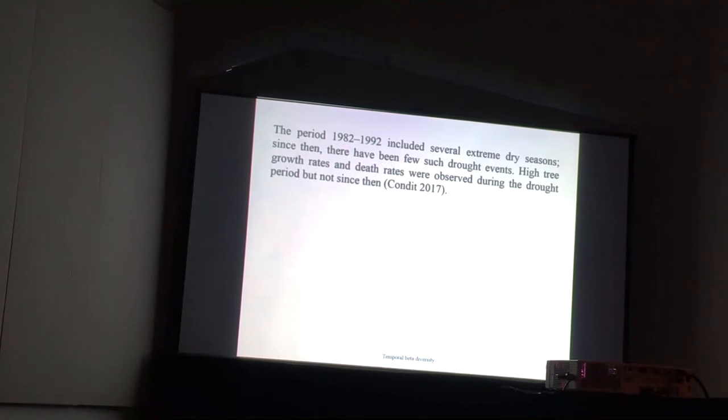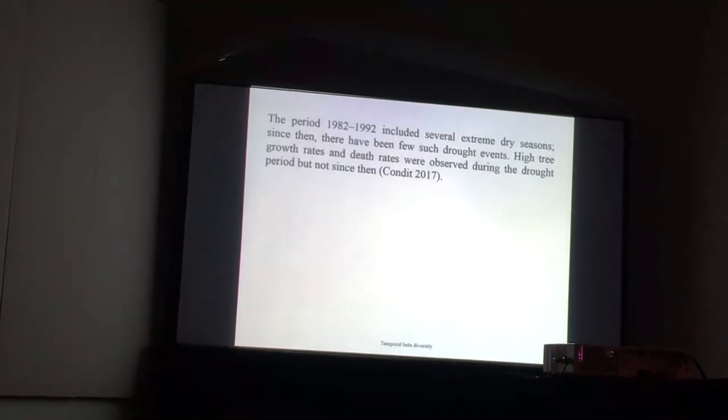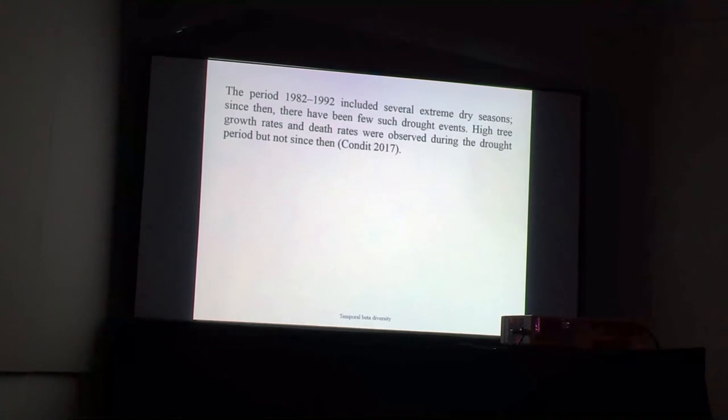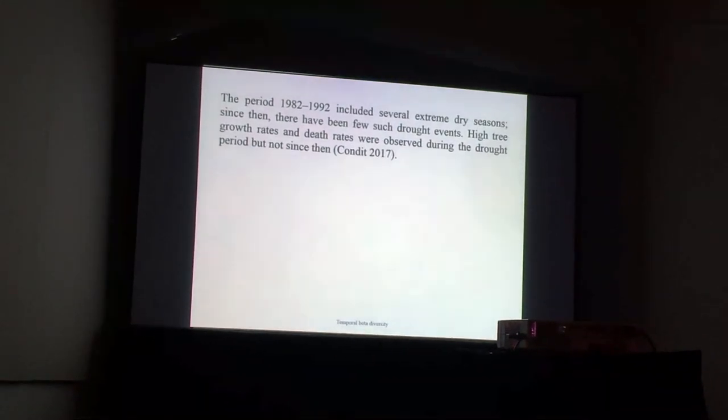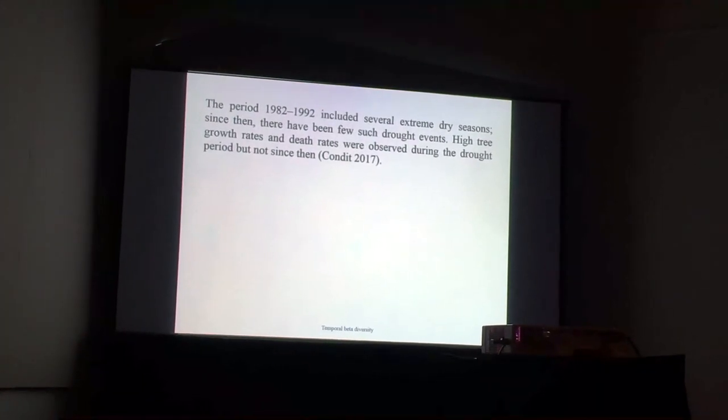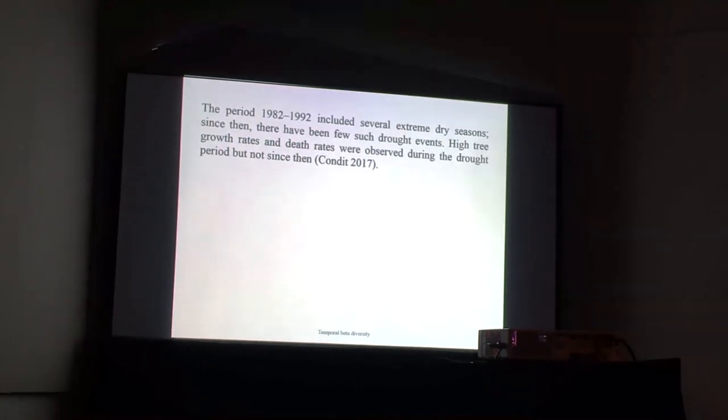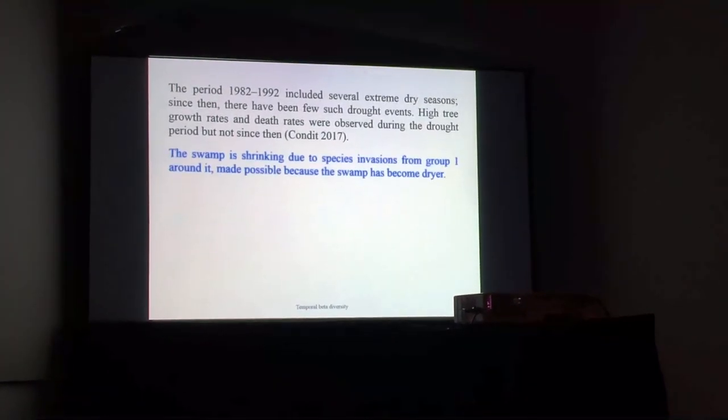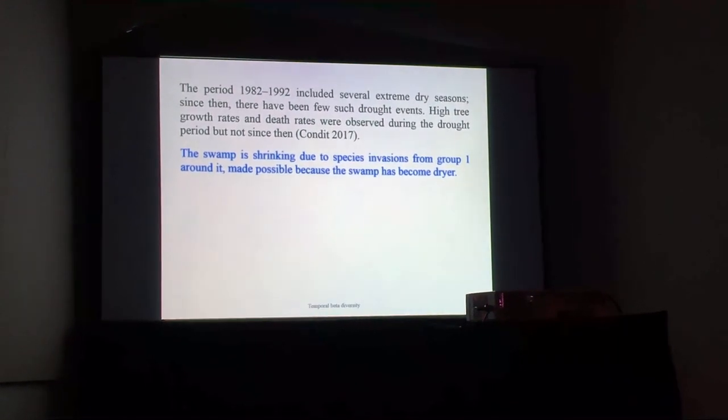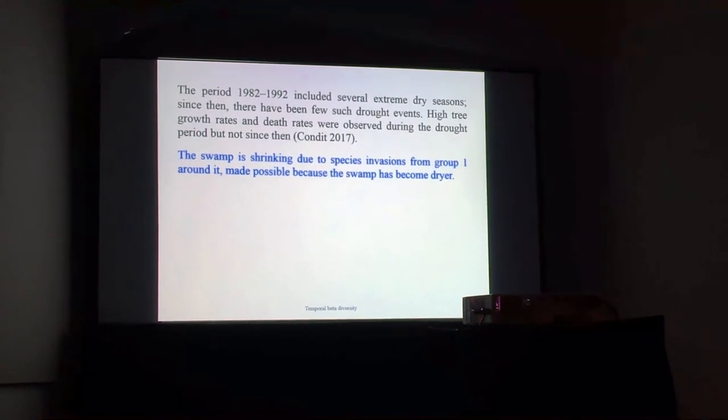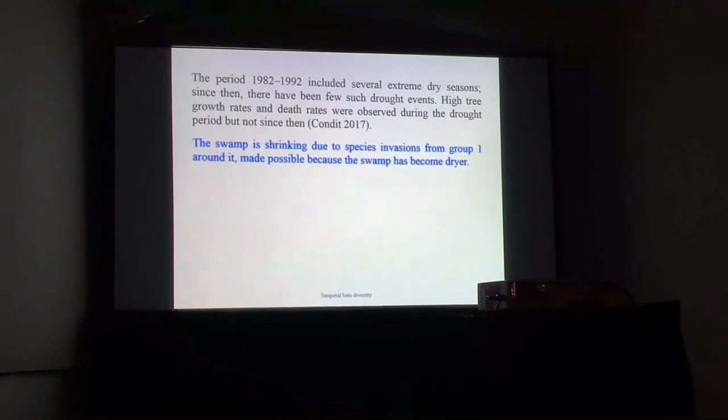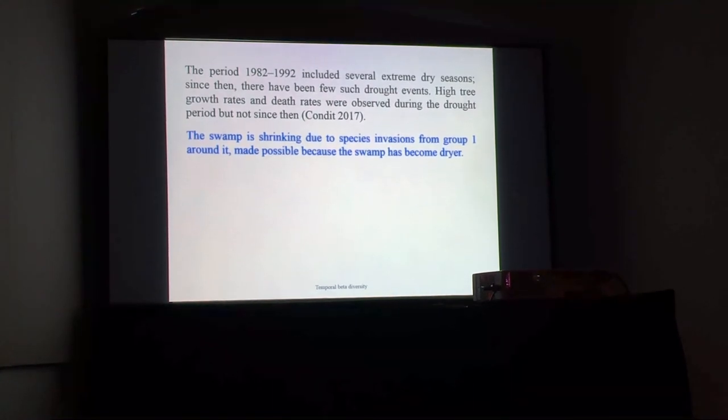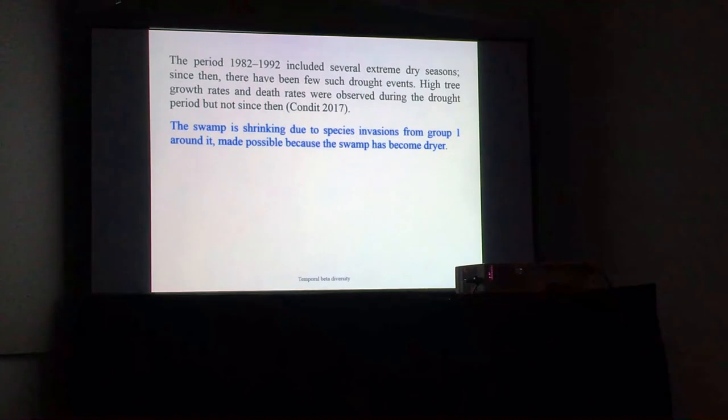Going back to the literature, we learned that the period from 1982 to 1992 included several extremely dry seasons, but since then there have been few such drought events. High tree growth rates and death rates were observed during the drought period but not since then. This is in a paper by Rick Condit, who is one of the PIs of the BCI forest. It seems that the swamp is shrinking due to species invasions from group one around it. This was made possible because the swamp has become drier, allowing species from the area around it to invade the swamp. There's a more detailed analysis of this in the paper, but I'm skipping that today.